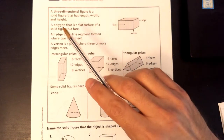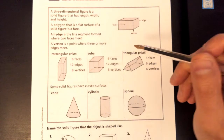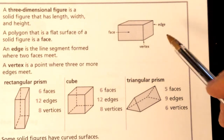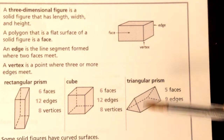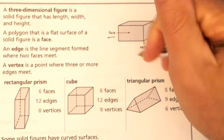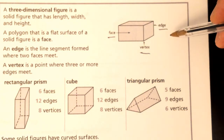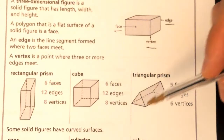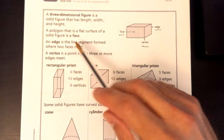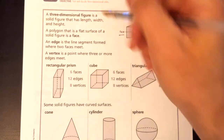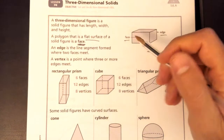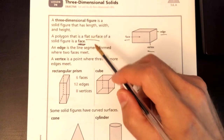A 3D figure is a solid figure that has length, width, and height. The key attributes of 3D shapes that most problems on the state test will ask about are: how many edges, how many vertices, how many faces does a given shape have. A polygon that is a flat surface of a solid figure is called a face. So if it's a flat surface, it's a face. If it's a curved surface, it's not a face.